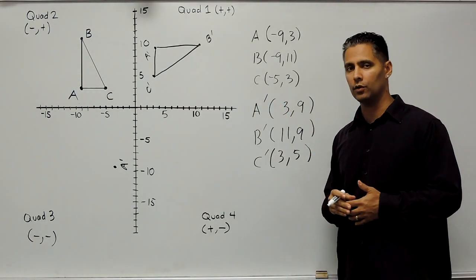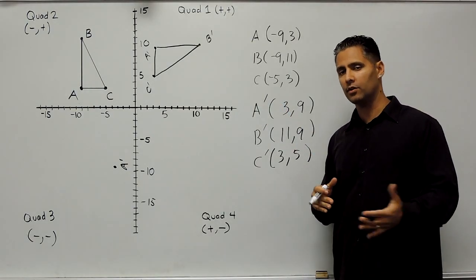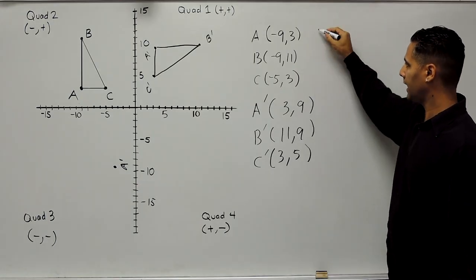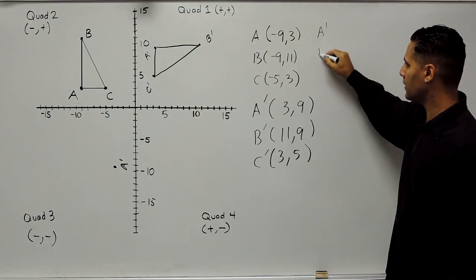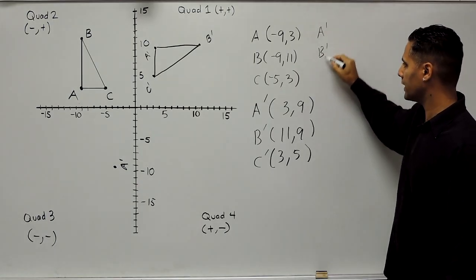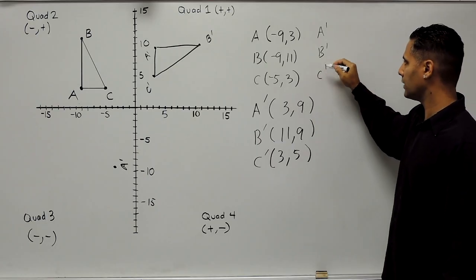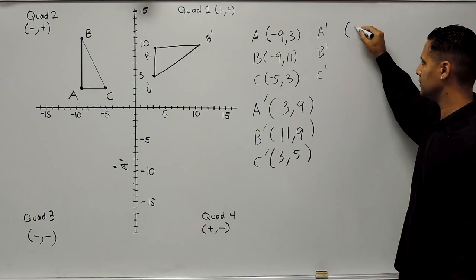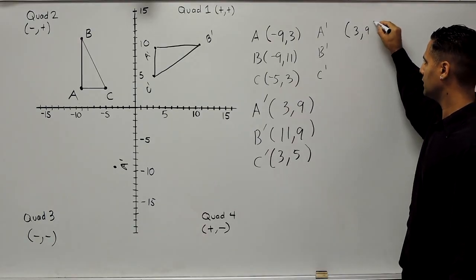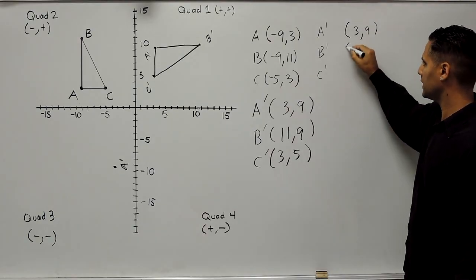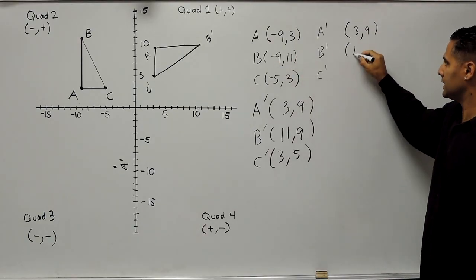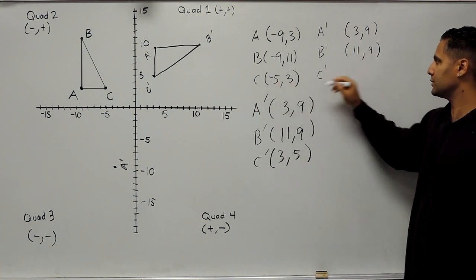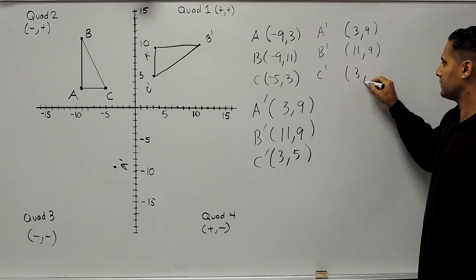That's what the triangle looks like when you rotate it 90 degrees clockwise on the coordinate plane. Now let's take the same triangle and rotate it 90 degrees counterclockwise. We start with our original points and do the same thing — switch around the original x and y values: change (9, 3) to (3, 9), change (9, 11) to (11, 9), and change (5, 3) to (3, 5).